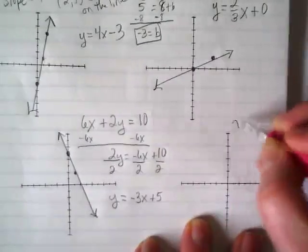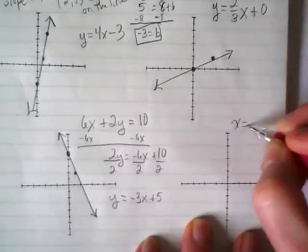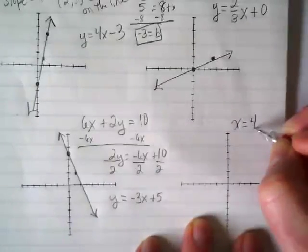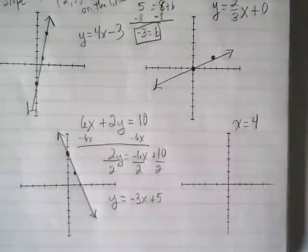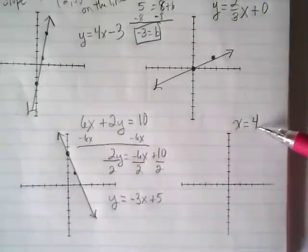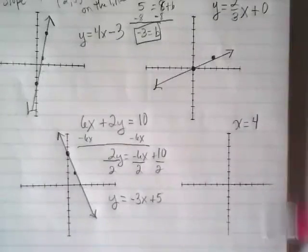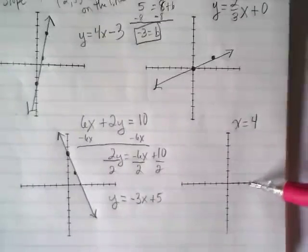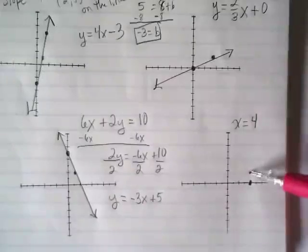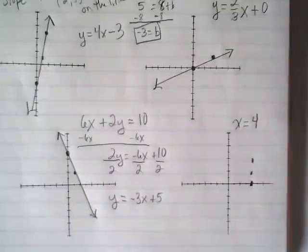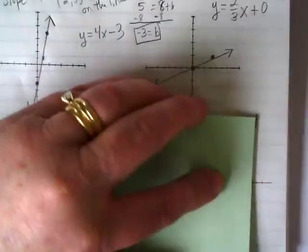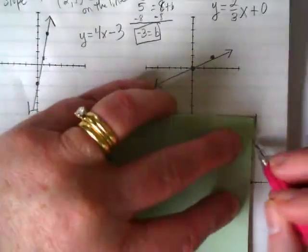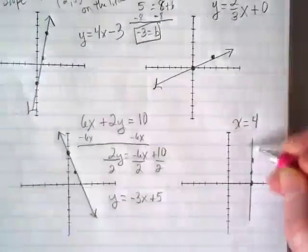What if you have an equation that says something like x equals 4? So what kind of line is this? A vertical line.